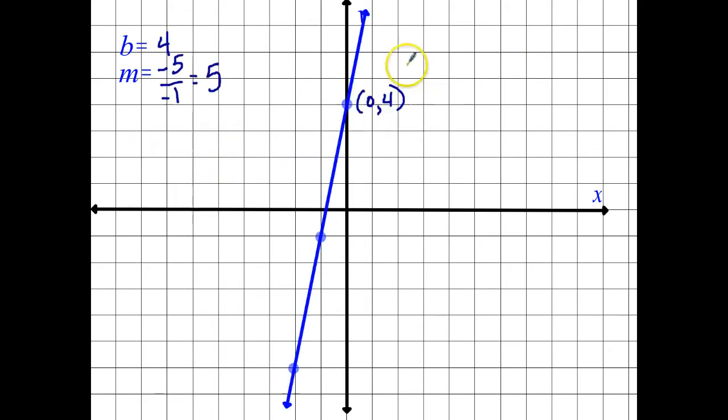Try another one. Go ahead. Do this one. Let's see. Hopefully you got y is equal to mx plus b. And so that equals y is equal to, the slope is 5x plus 4. And there you have it.